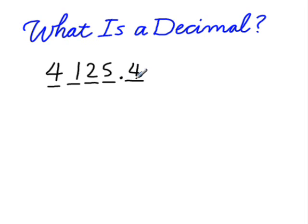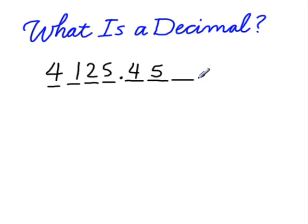The next place value is the hundredths. So if we have four tenths and five hundredths, we would read the number 4,125 as 'four thousand one hundred twenty-five and forty-five hundredths.' Adding another digit extends to the thousandths place, giving us 'four thousand one hundred twenty-five and four hundred fifty-six thousandths.' Decimals are really just another way of writing fractions.